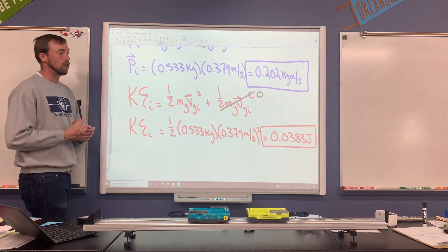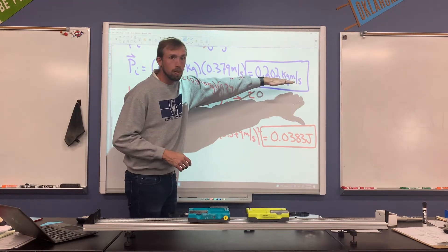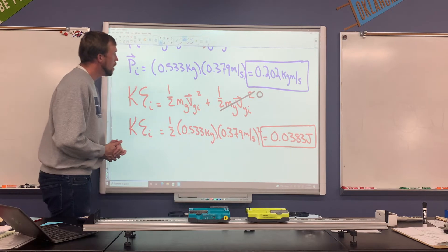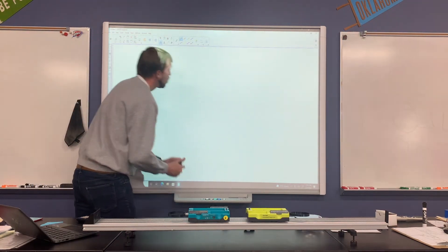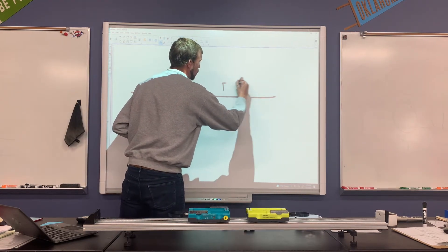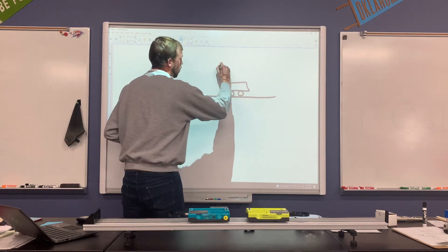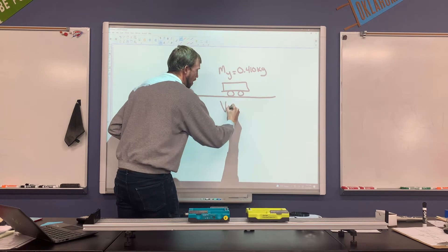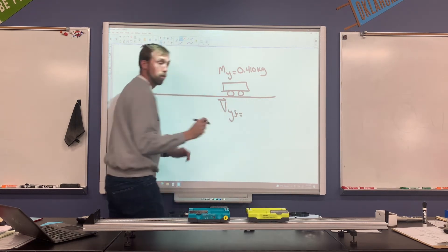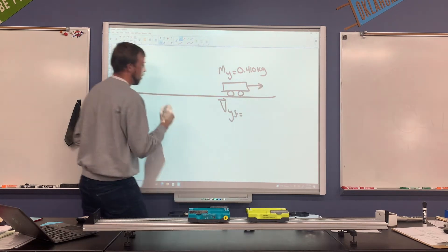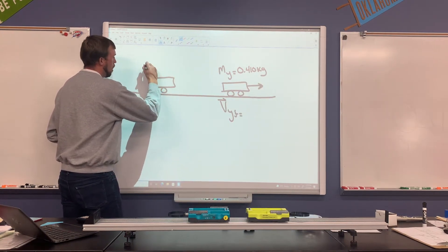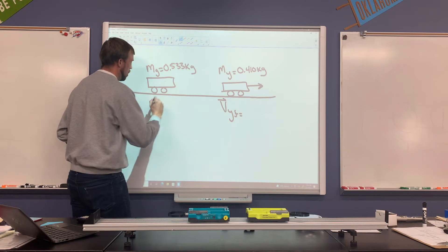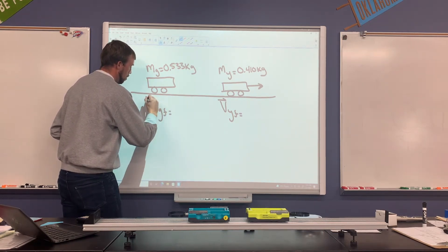Now I want to check the final conditions and see how they align — is our momentum mostly conserved at about 0.202 kg·m/s, and do we see a loss of energy? I'll draw our final conditions diagram. Here's the yellow cart — mass 0.41 kilograms — and we need its final velocity. And here's the green cart — mass 0.533 kilograms — and we need its final velocity too. The green cart is likely traveling slower and the yellow cart should now have a non-zero velocity.